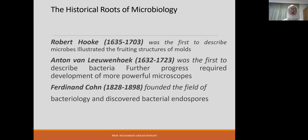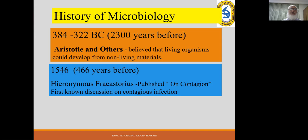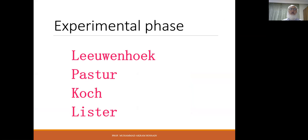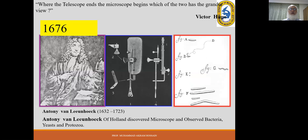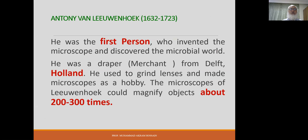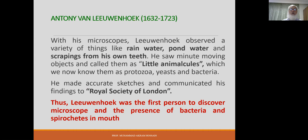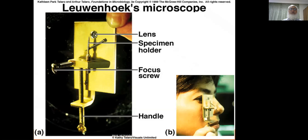Antony Van Leeuwenhoek was the first to describe bacteria through the discovery of the microscope. His microscope could magnify objects about 200 to 300 times. Leeuwenhoek was the first person to discover the presence of bacteria and spirochetes in the mouth. This is his microscope and the figures he drew from his microscopic findings.